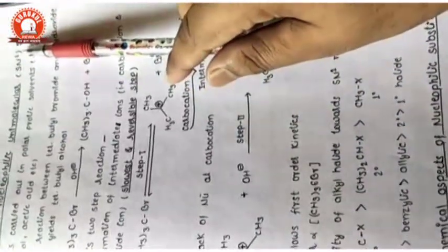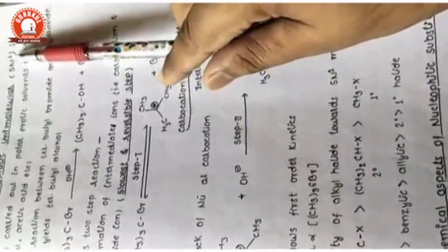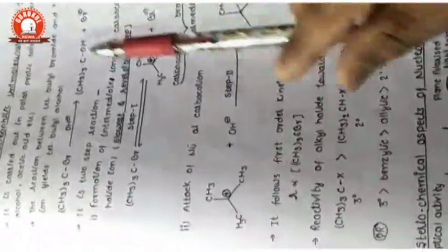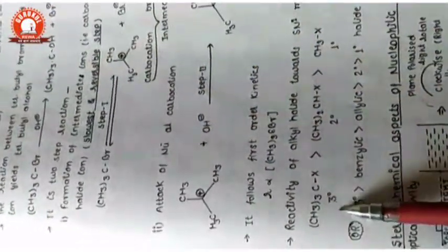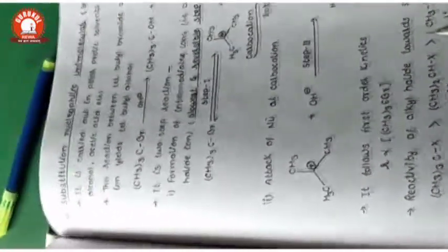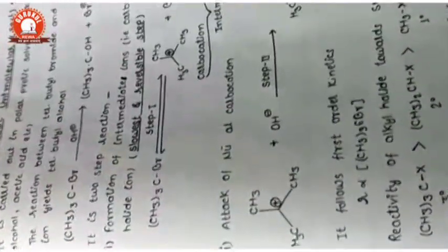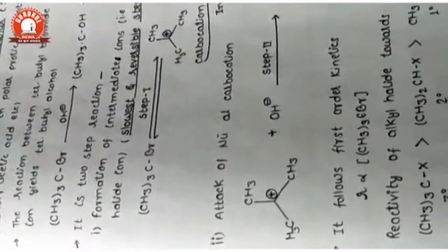To summarize: SN1 has a smaller number (one step in rate-determining step) so it prefers the greater stability — tertiary > secondary > primary. SN2 completes in one step, so it prefers primary. These mechanisms are very important for your exam — read and understand them clearly.